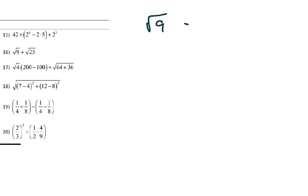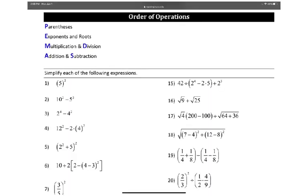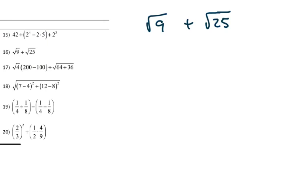Number sixteen is the square root of 9 plus the square root of 25. PEMDAS groups roots with exponents — and a square root is actually the same as raising to the one-half power. The square root of 9 asks: what times itself gives 9? That's 3. What times itself gives 25? That's 5. So 3 plus 5 is 8.